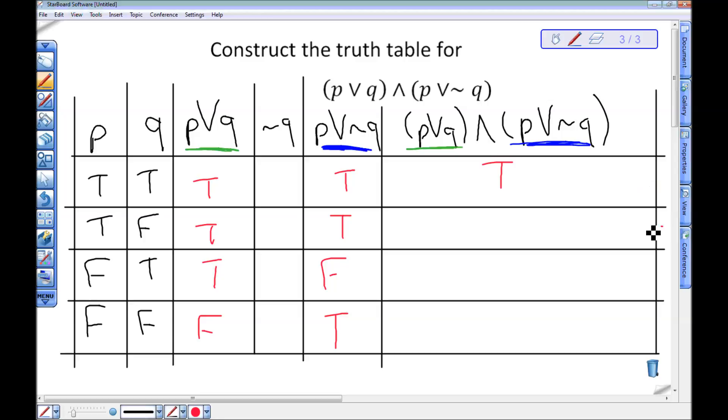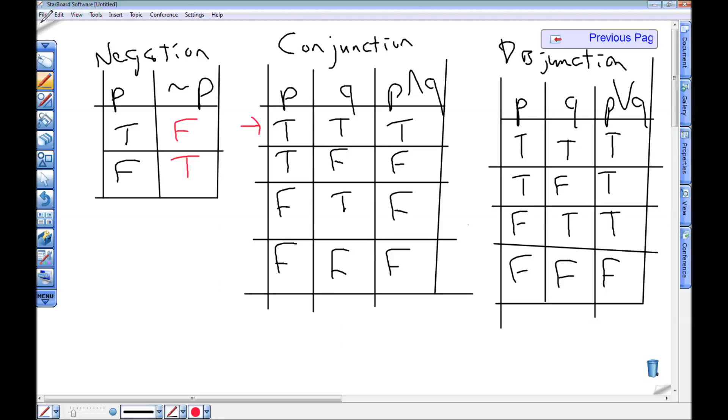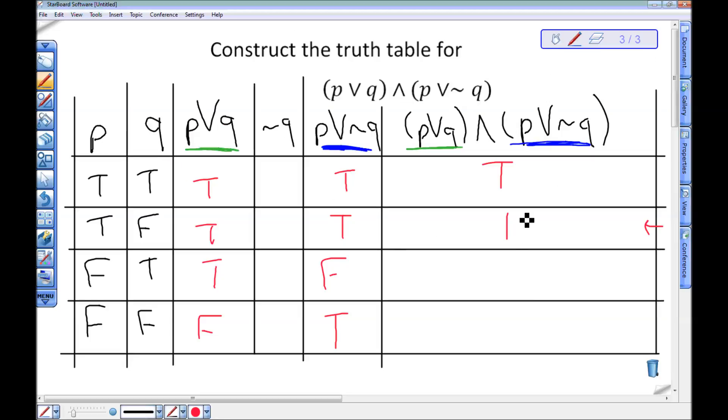Now I'm going to look at my second column. That has true and true as well. I'm just double checking my conjunction truth table. True and true, still true. So I'm going to put a T here.